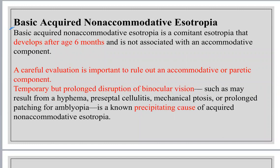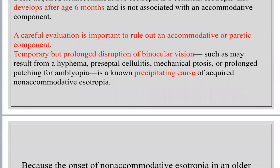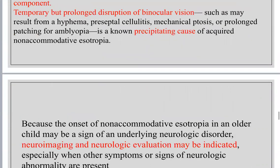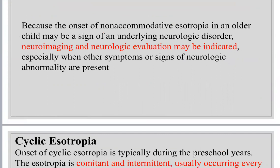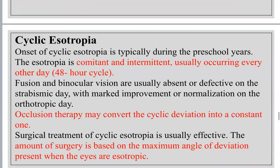Basic acquired non-accommodative esotropia is important in differential diagnosis because it occurs at the age typical of accommodative esotropia but has characteristics like congenital esotropia. It starts after six months of age so it is not called infantile. Careful evaluation is needed to rule out an accommodative or paralytic component. It may be precipitated by prolonged disruption of binocular vision by any cause, such as amblyopia or mechanical ptosis. It may be associated with neurological disorder, so neuroimaging may be indicated.